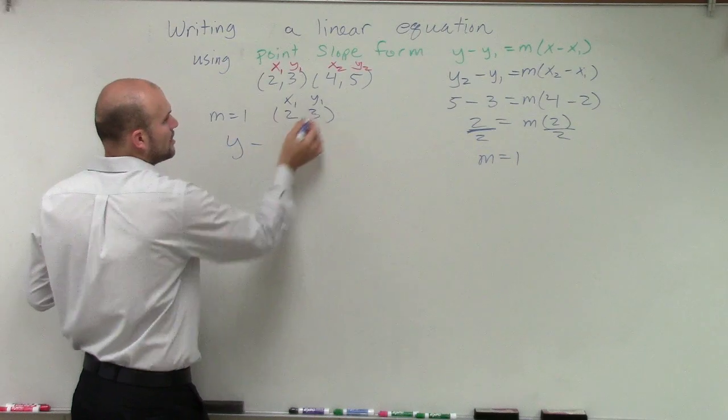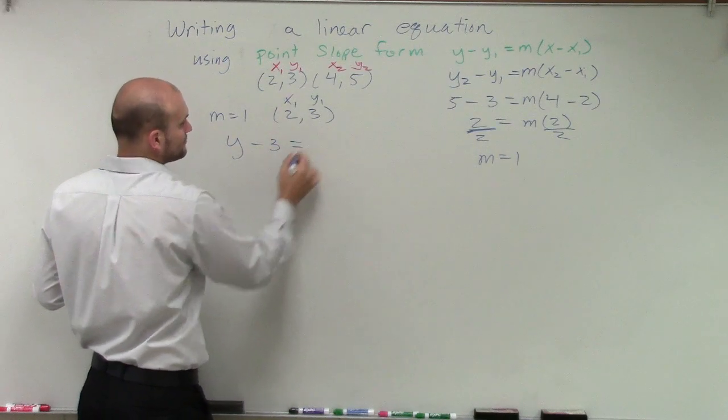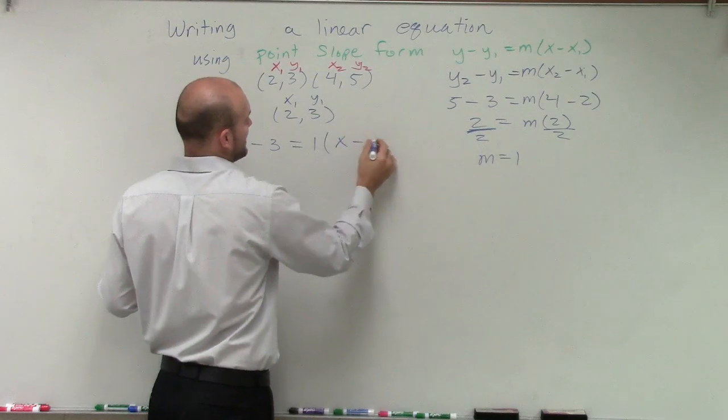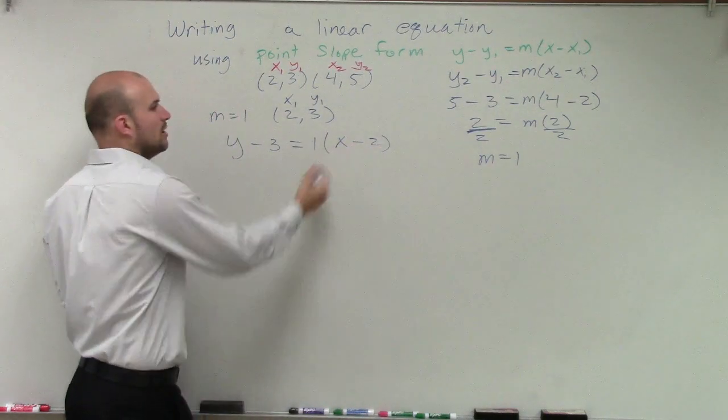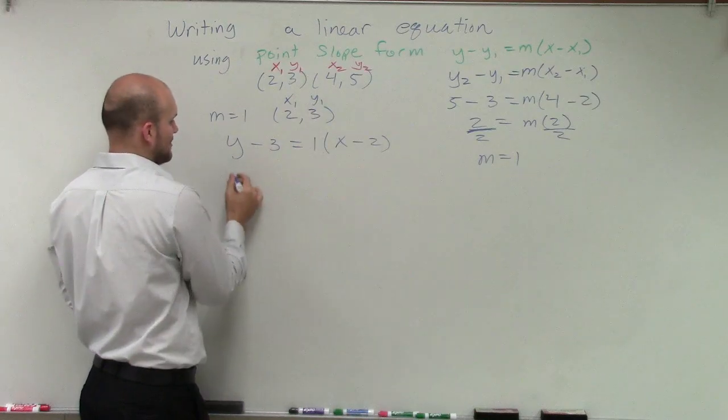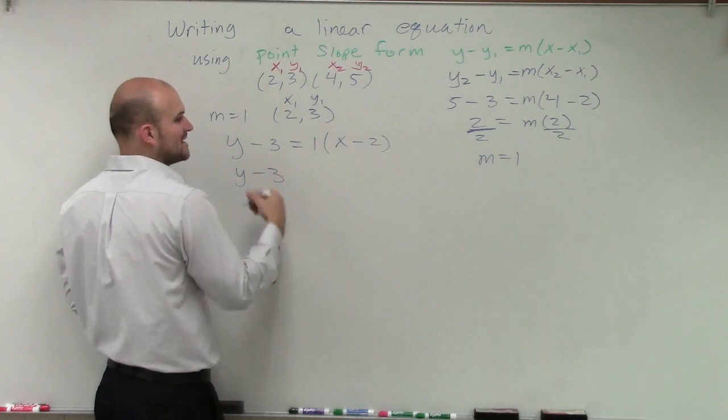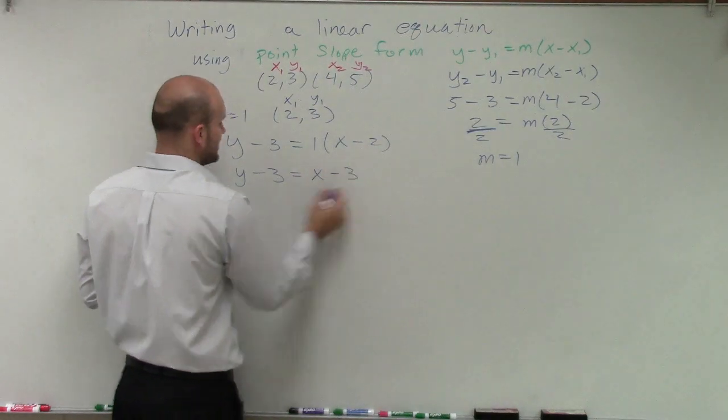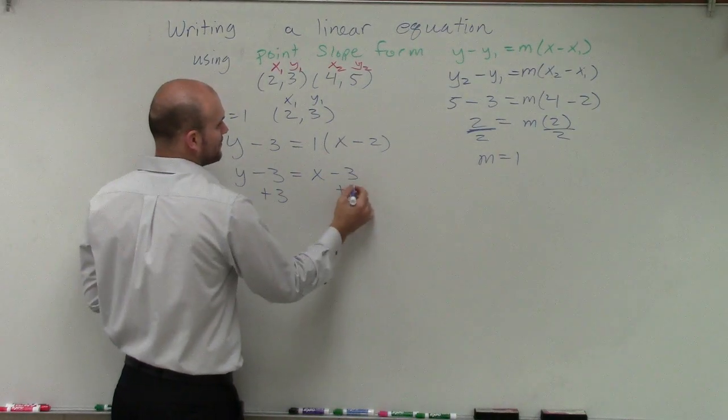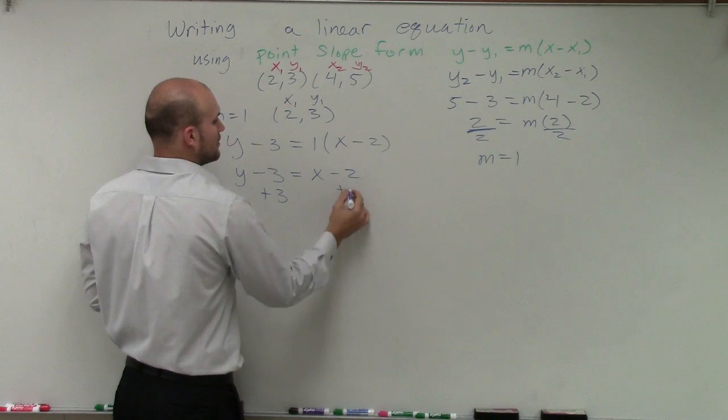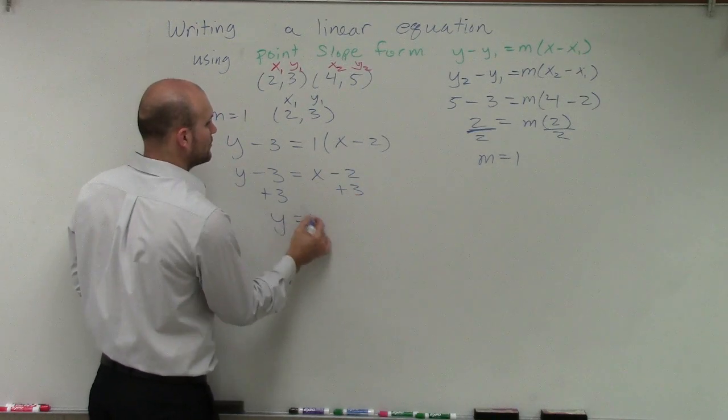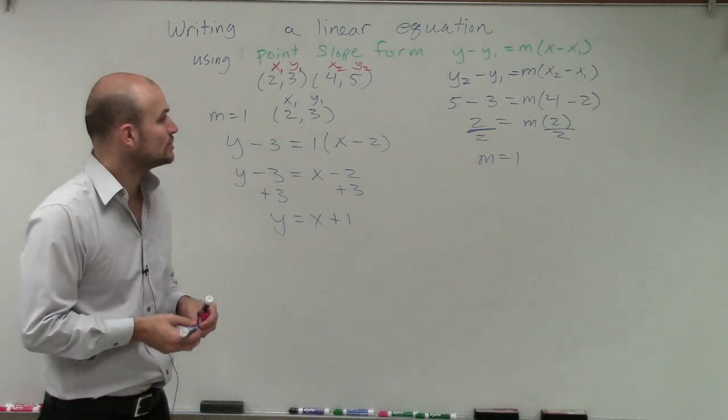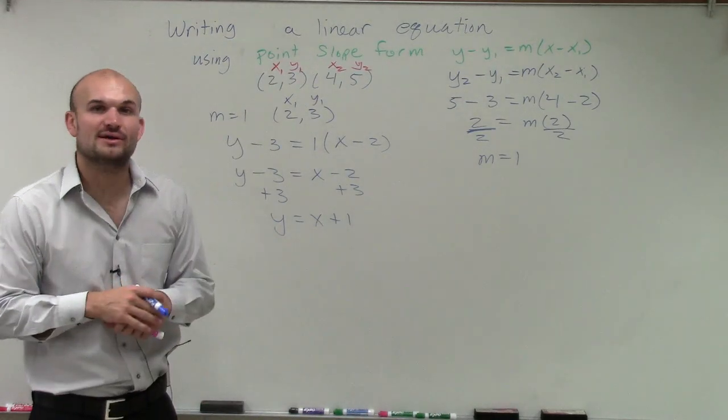So I have y minus y1, which is 3, equals 1 times x minus x2. Well, applying distributed property times 1 is not really going to do much for us, since 1 times anything is going to be what you multiplied it by. So that's going to be x minus 3. And then I'll add 3 to both sides. So therefore, y equals x plus 1. And that is now our equation in slope-intercept form between these two points. Thanks.